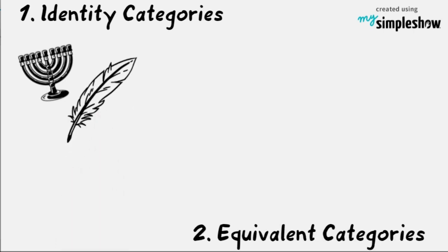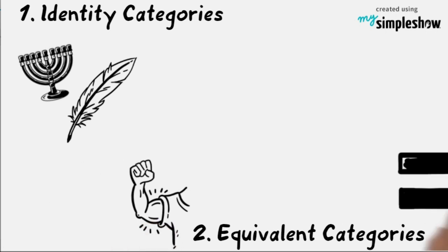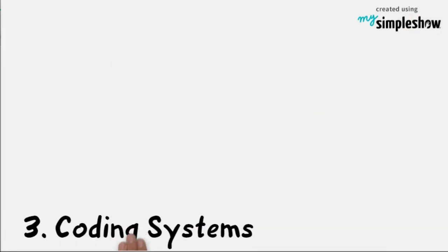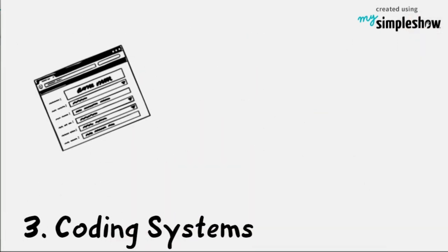Second is equivalent categories. Equivalents can be determined by effective criteria which render objects equivalent by emotional reactions, functional criteria based on related function. Last is coding systems, categories that serve to recognize sensory input.